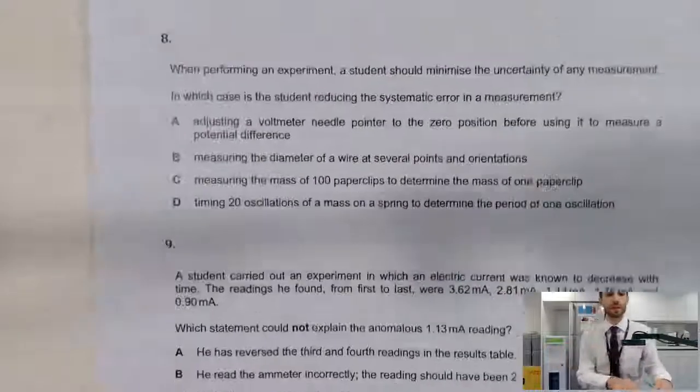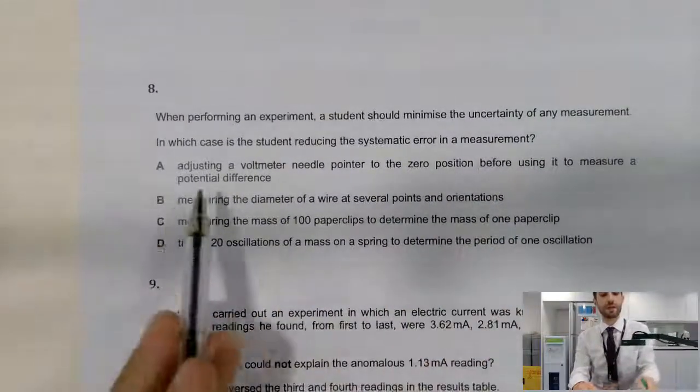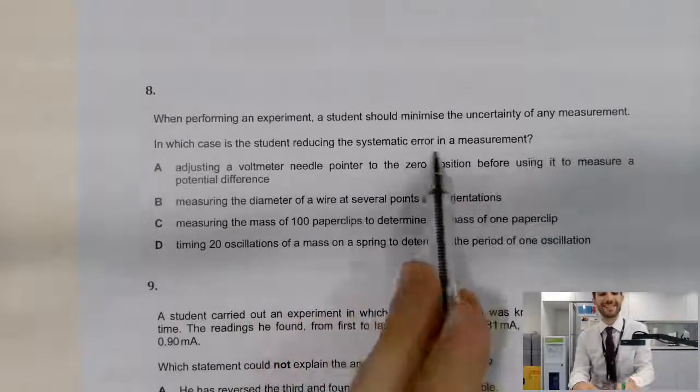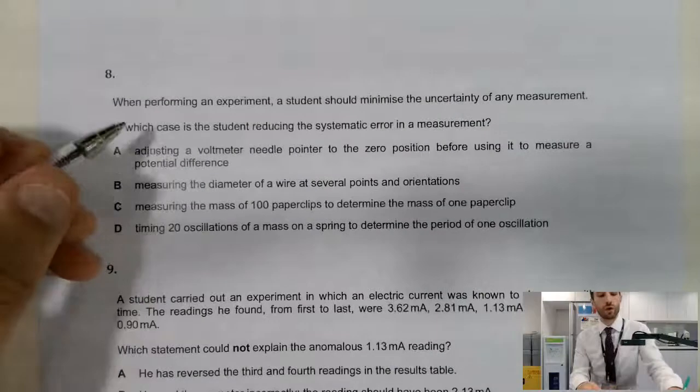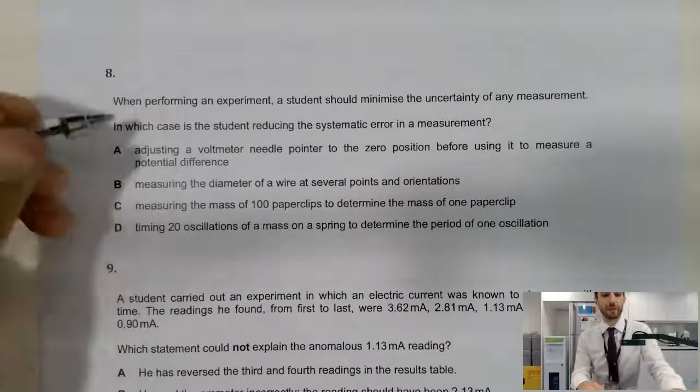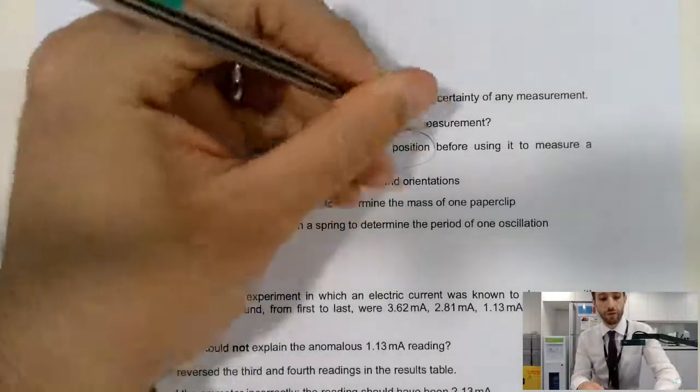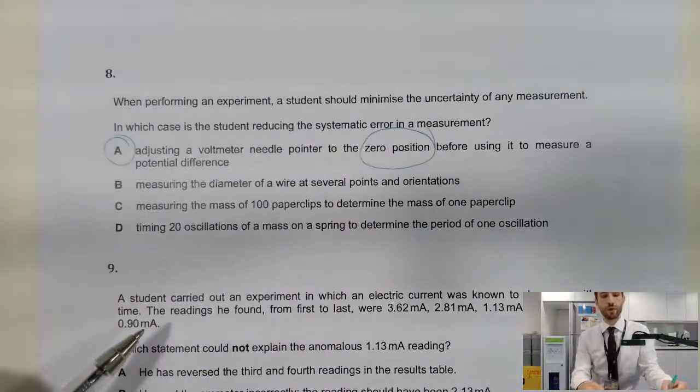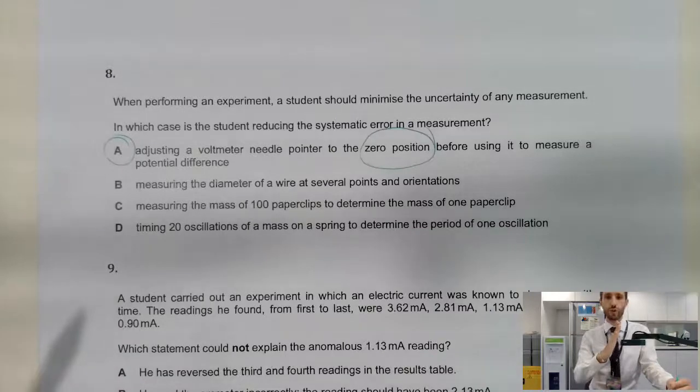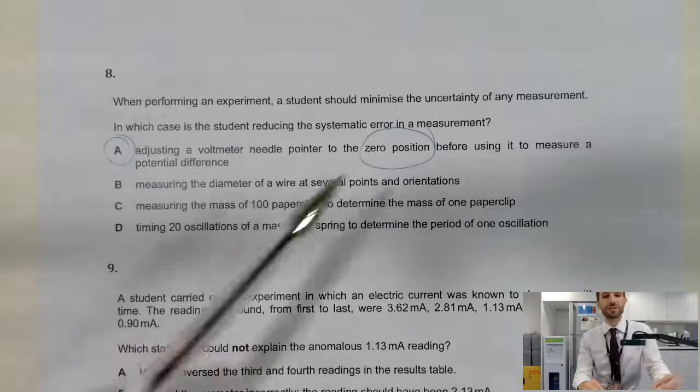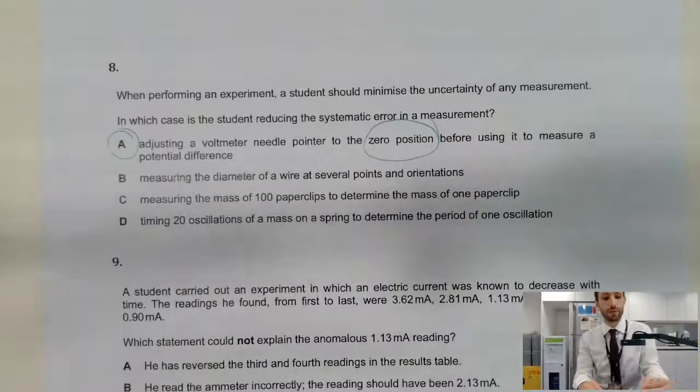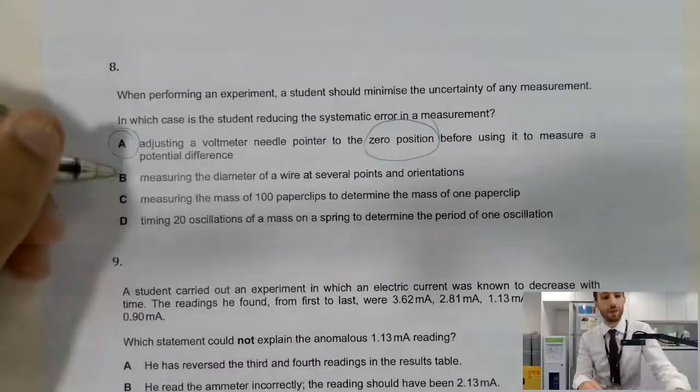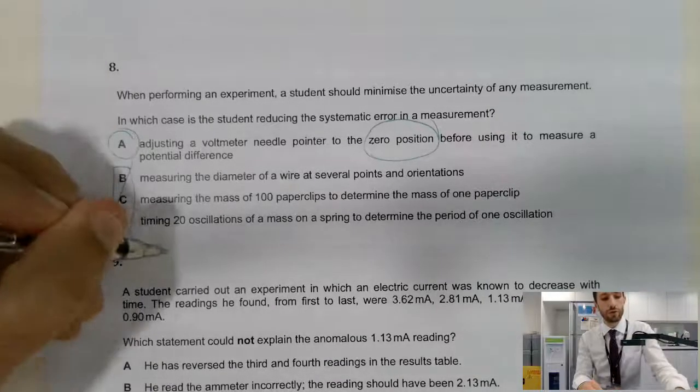Last ones. Can we do it in the last two minutes? Performing an experiment, we want to minimize the uncertainty. How are we reducing the systematic error? Well, key to point here is that we're looking at what a systematic error is. It affects everything by the same amount. And zero errors is always a good way of doing so. Remember, if you're starting to read something and it starts at 0.1, every reading is going to be too big by 0.1. So what we do is we adjust it to the zero position. Measuring things multiple times, diameter and multiple paper clips and timing these. These are all not the answer. These are all to do with random error.